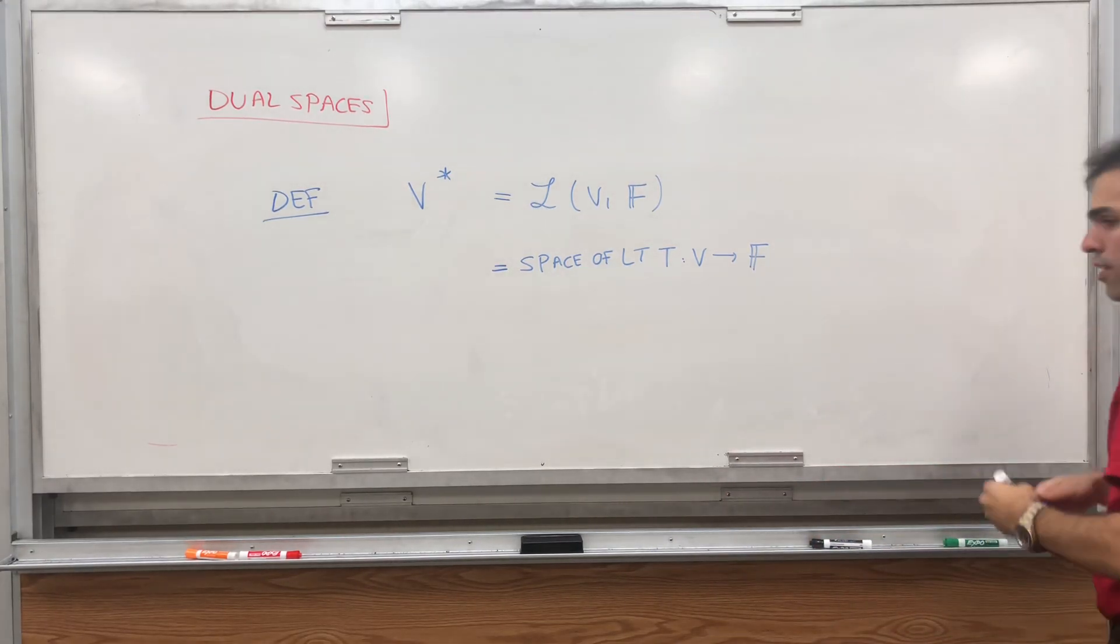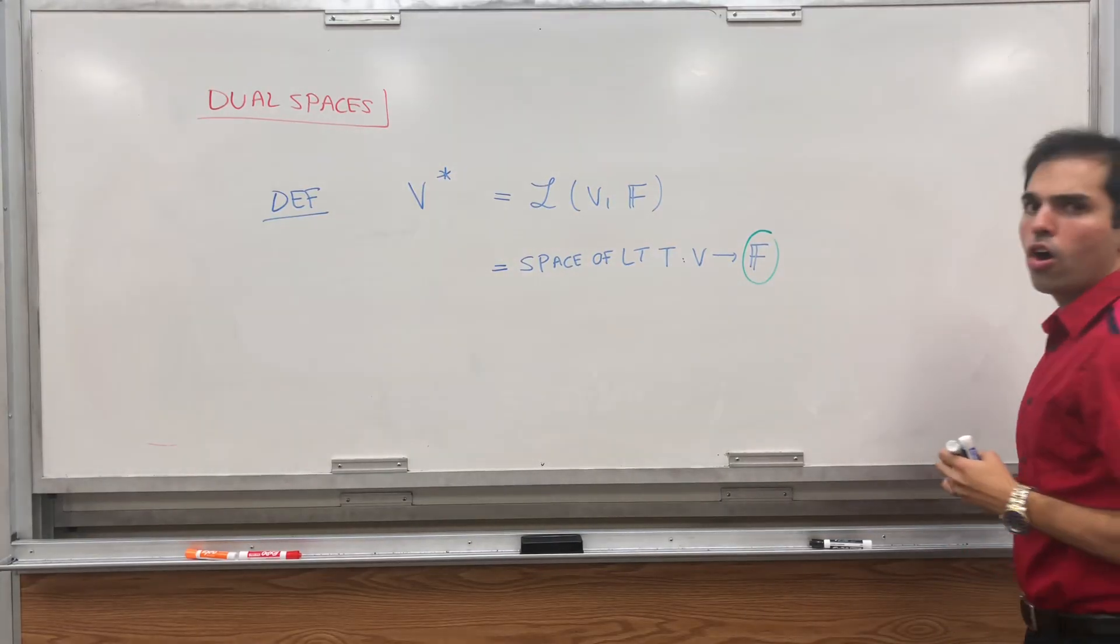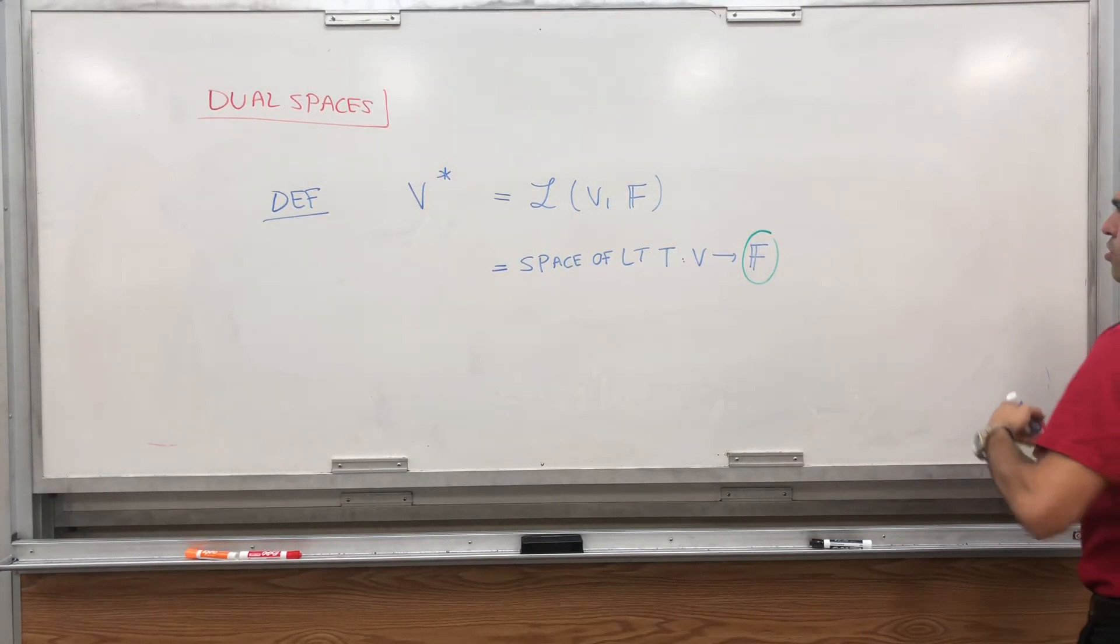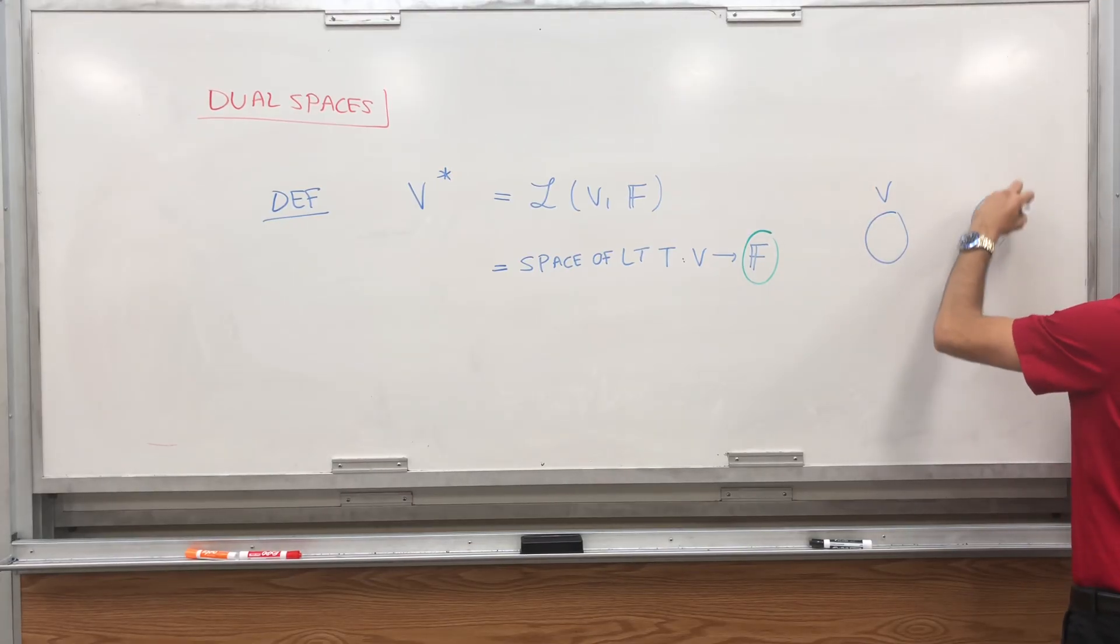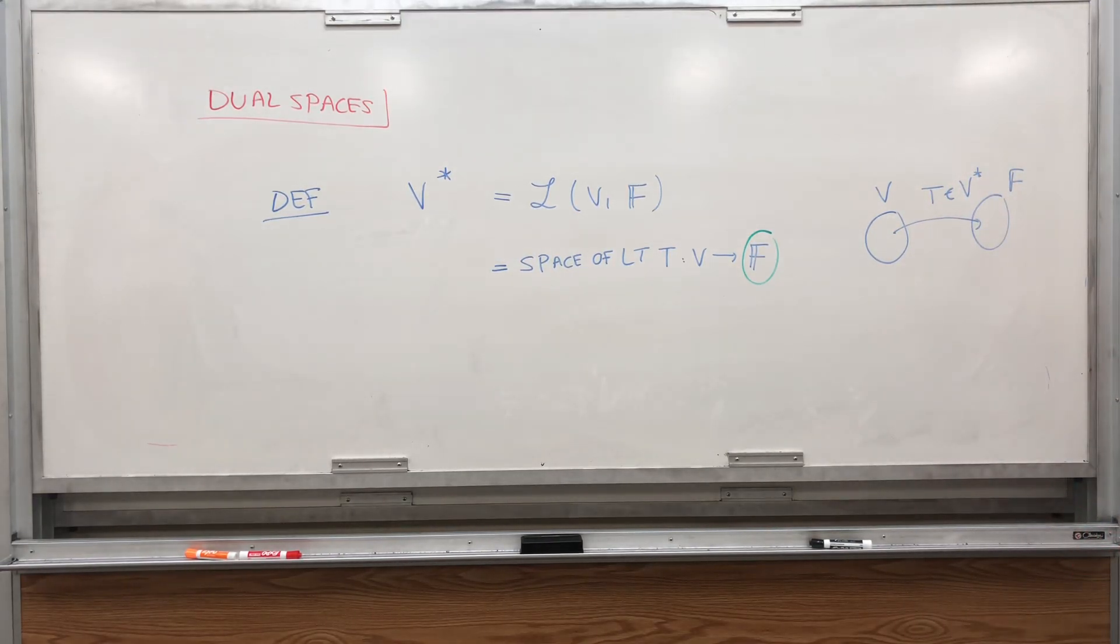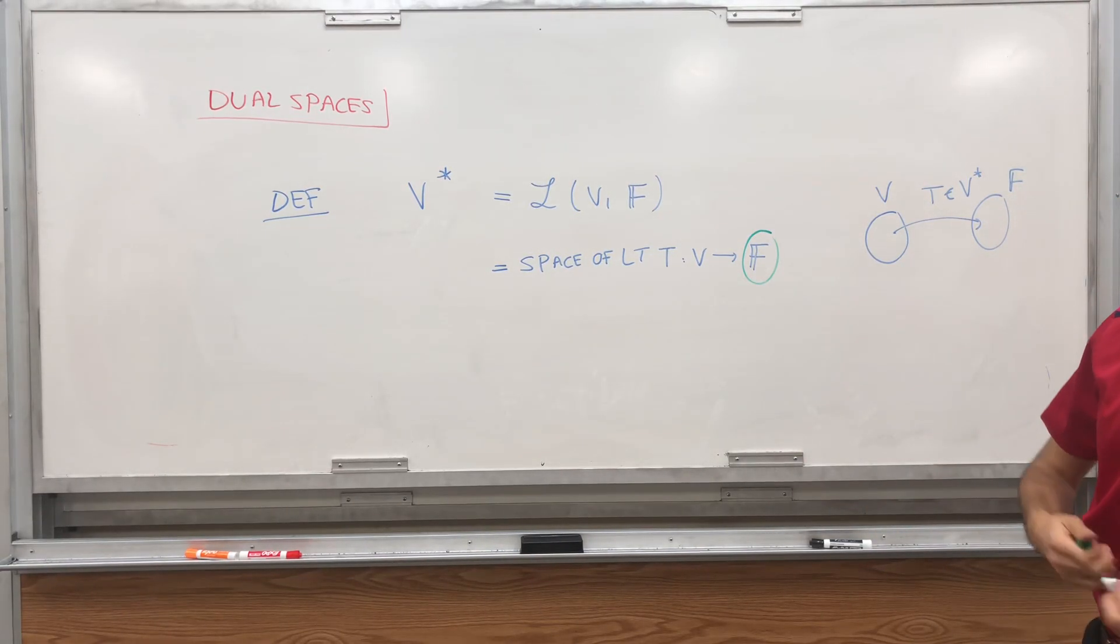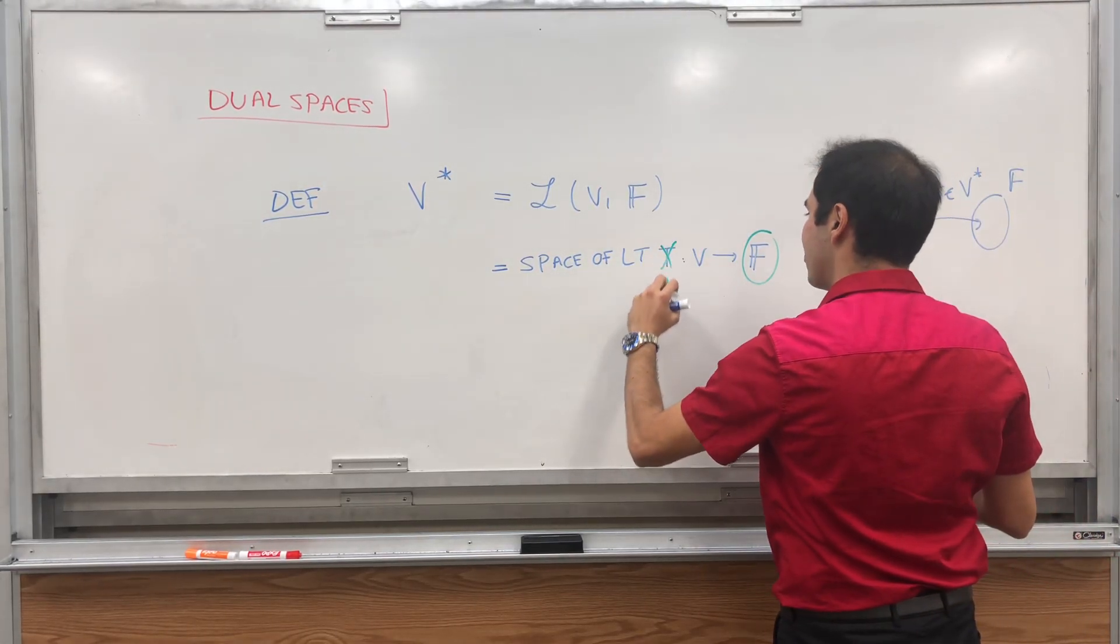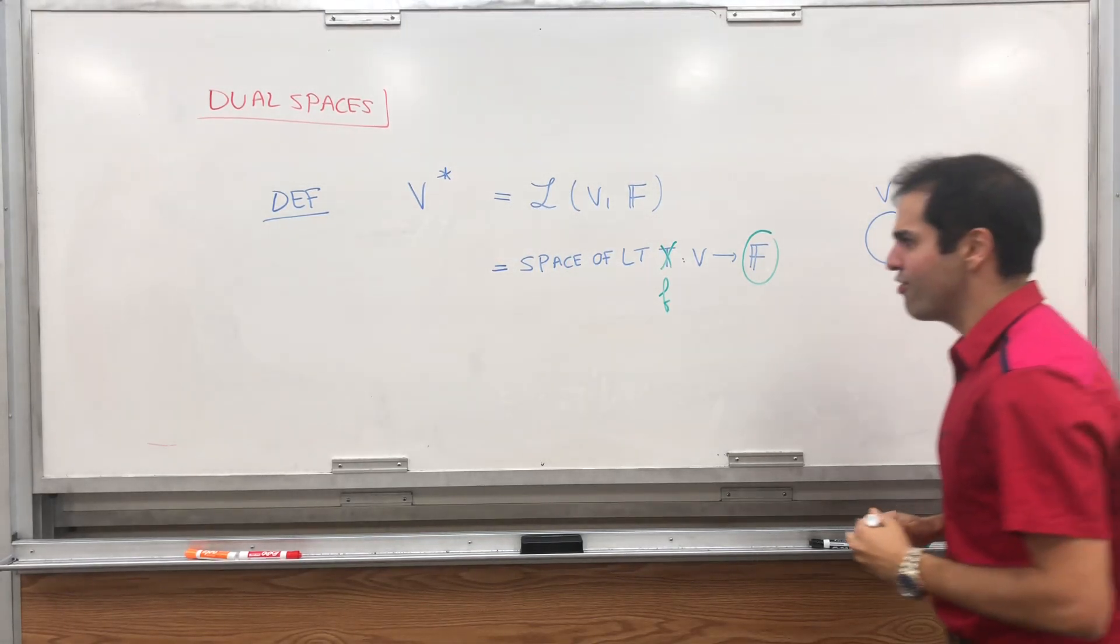So really what matters here is simply that the codomain or the outputs are real numbers. And so you can imagine like this is V and this is F and this is just T. That's an element of the dual space. And in particular to emphasize that the codomain is F, we write F instead of T. So press F to press T and this F is what's called a linear functional.